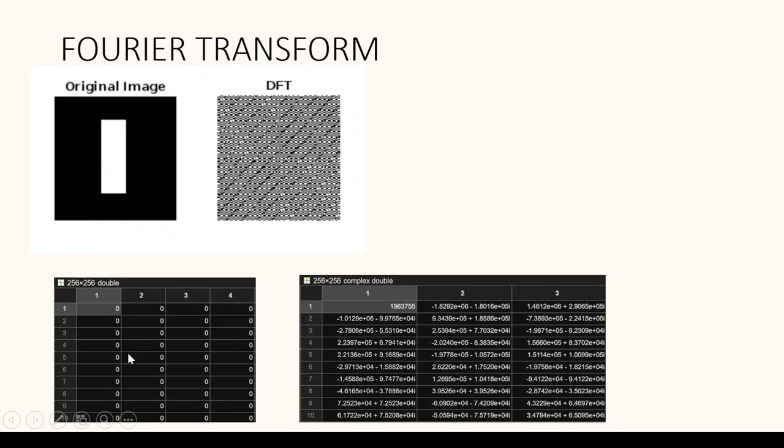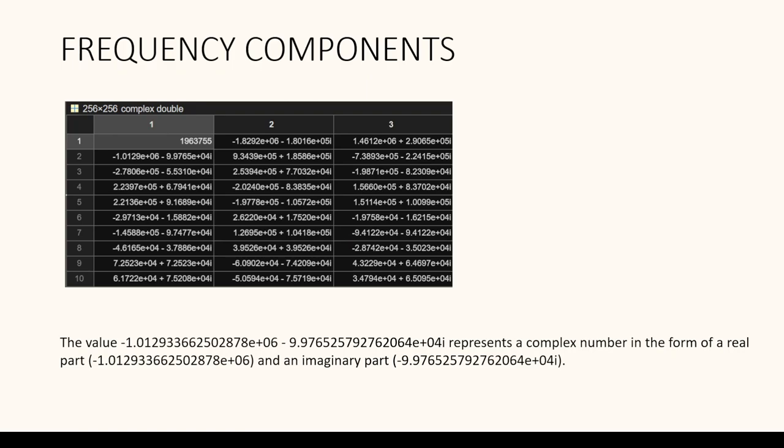For the original image, the matrix contains the intensity of each pixel. When you convert it into Fourier transform, it becomes a complex valued function which consists of the real and the imaginary part. The complex value representation obtained from the Fourier transform provides information about the frequency content of the image. It consists of both magnitude and phase components for each frequency present in that image.